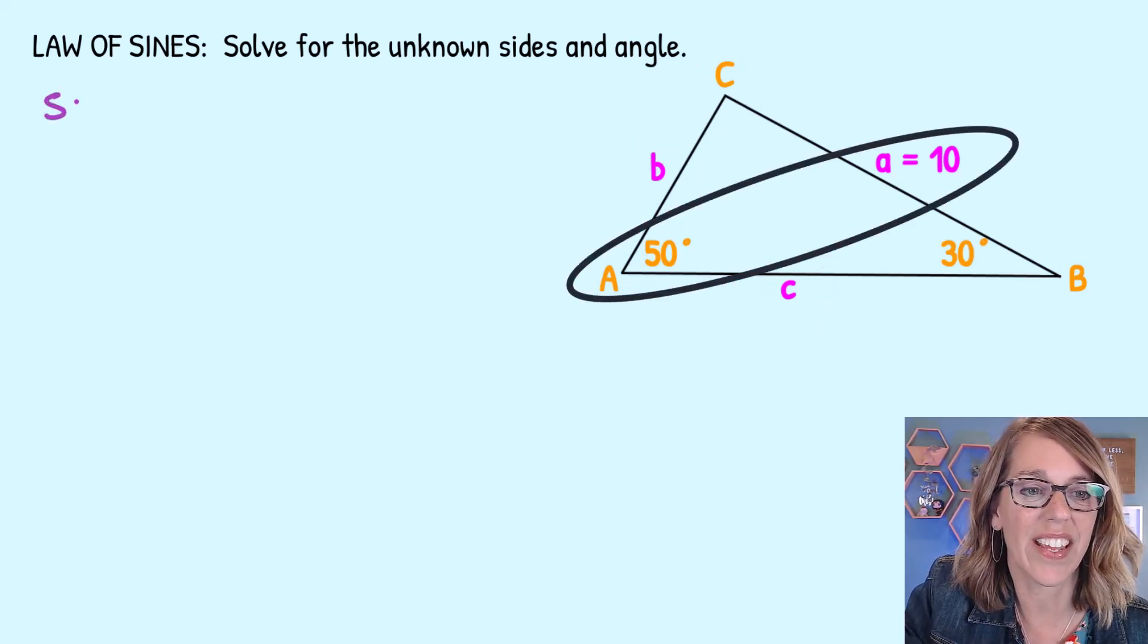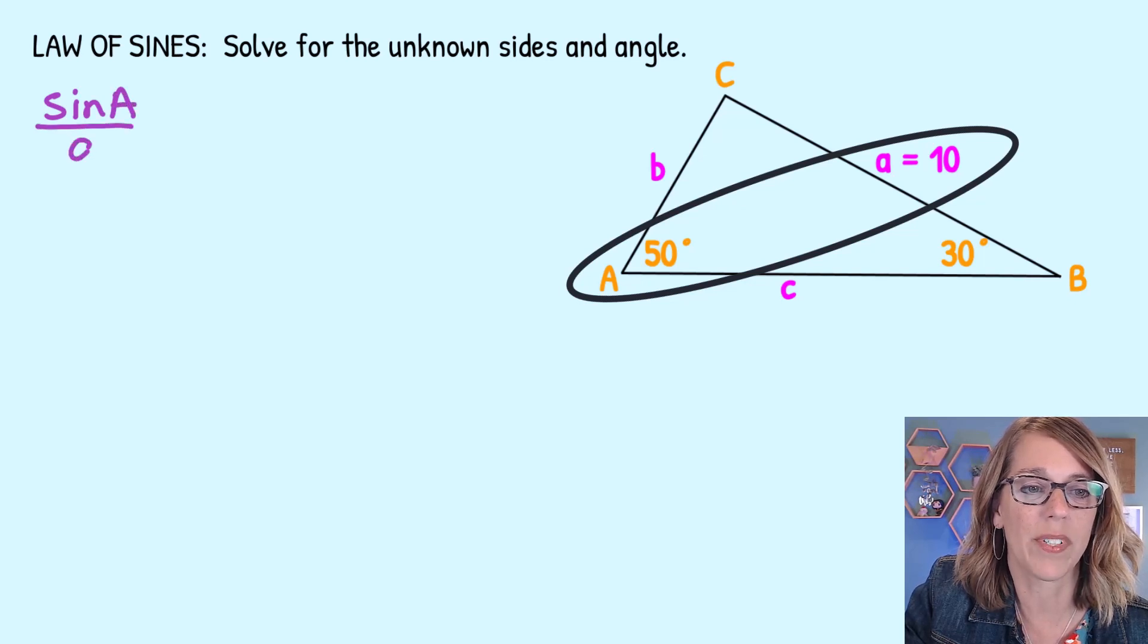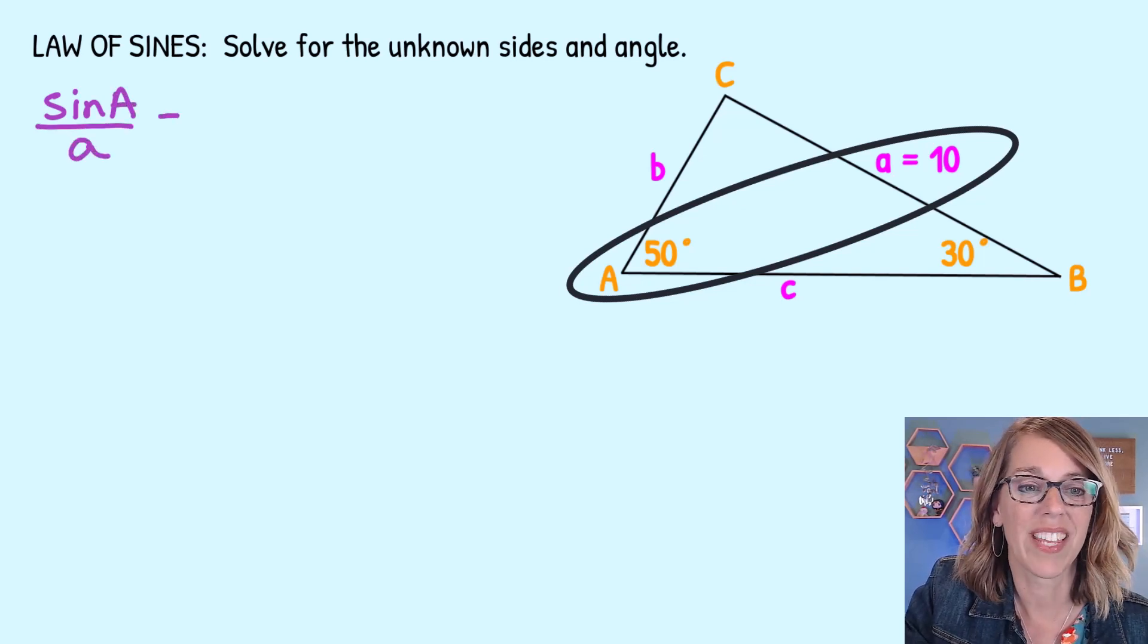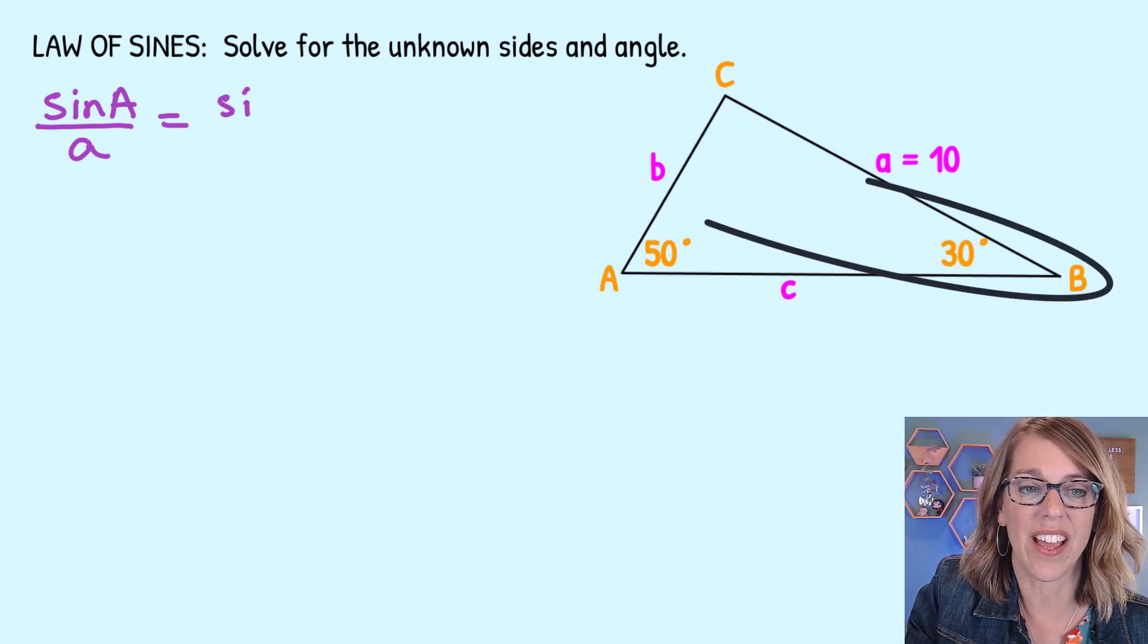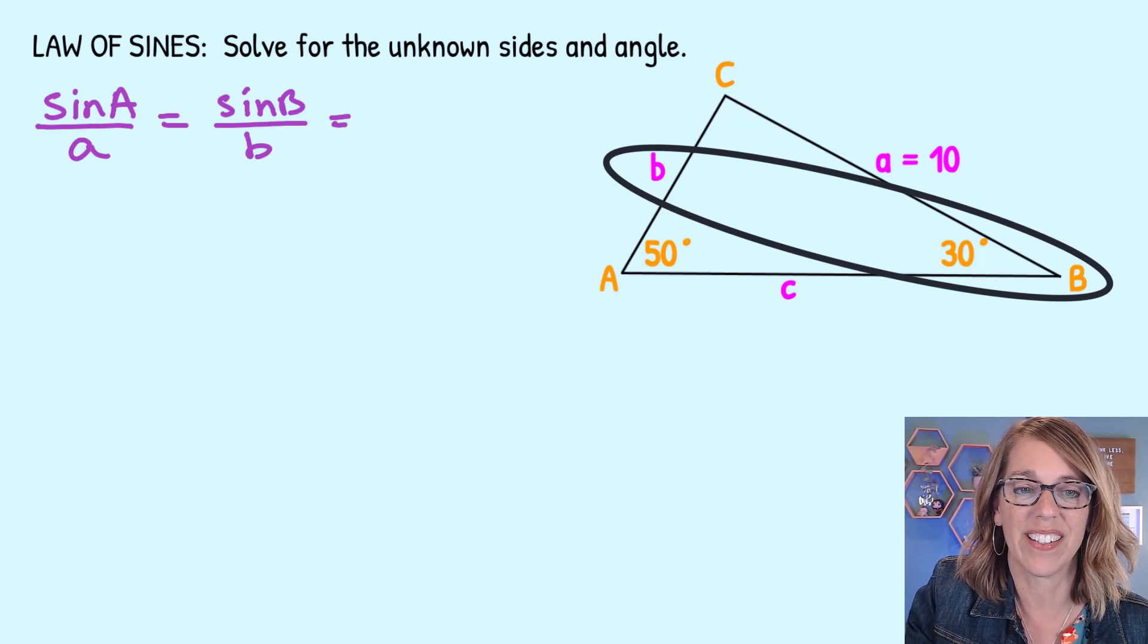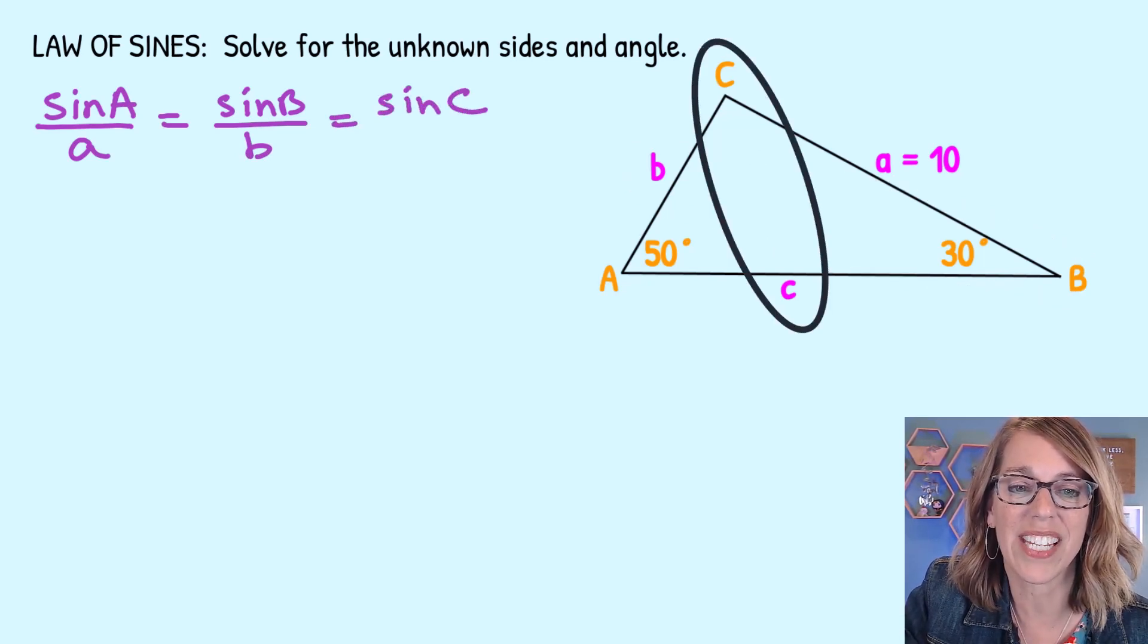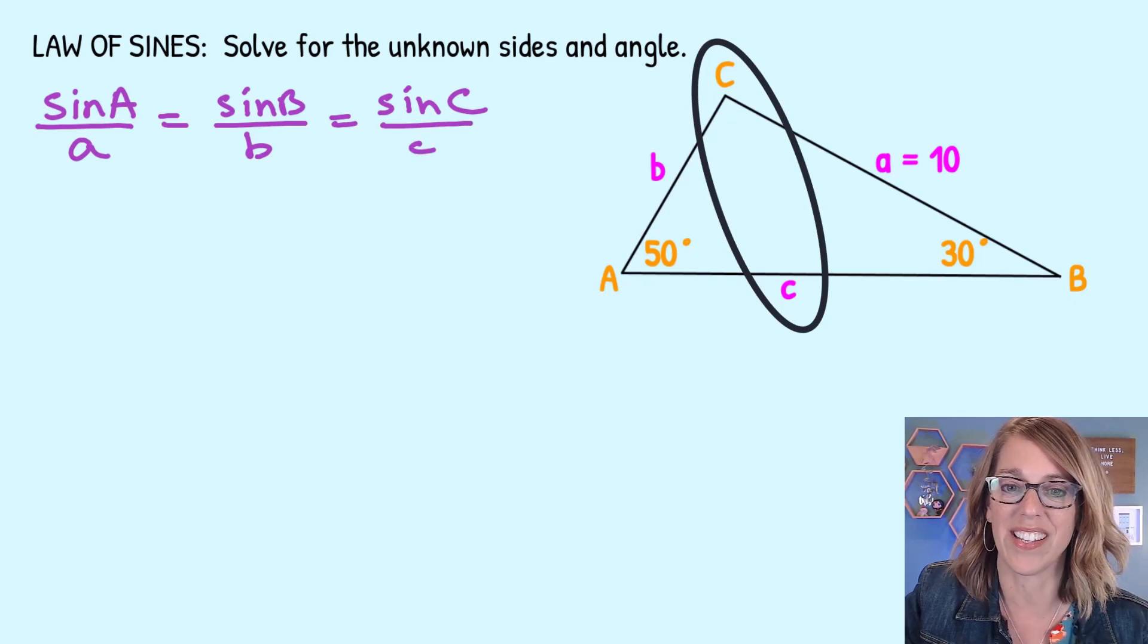It says that the sine of angle A is to the side opposite, which is lowercase a, is equal to the sine of angle B over side B, and that's the same proportion as the sine of angle C over side C.